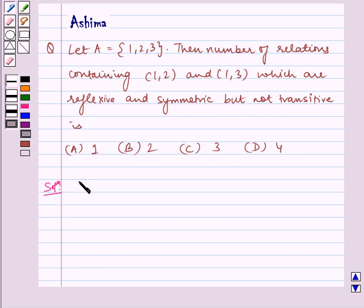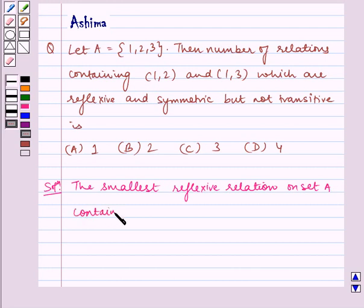Now let us write the solution. The smallest reflexive relation on set A containing (1,2) and (1,3) is R₁ given by